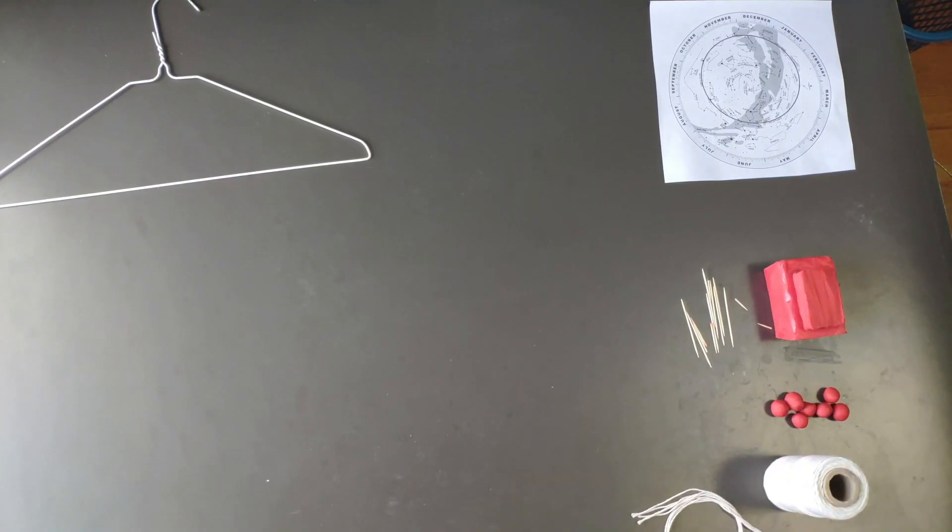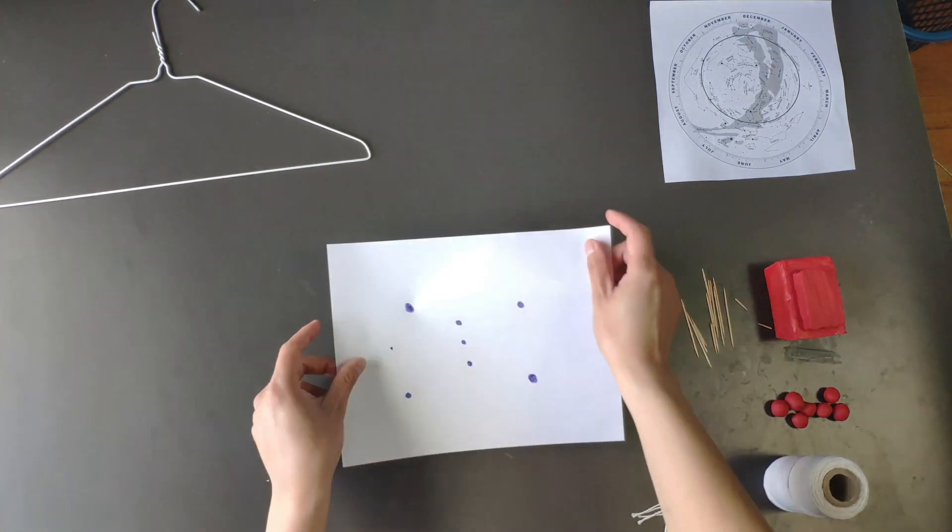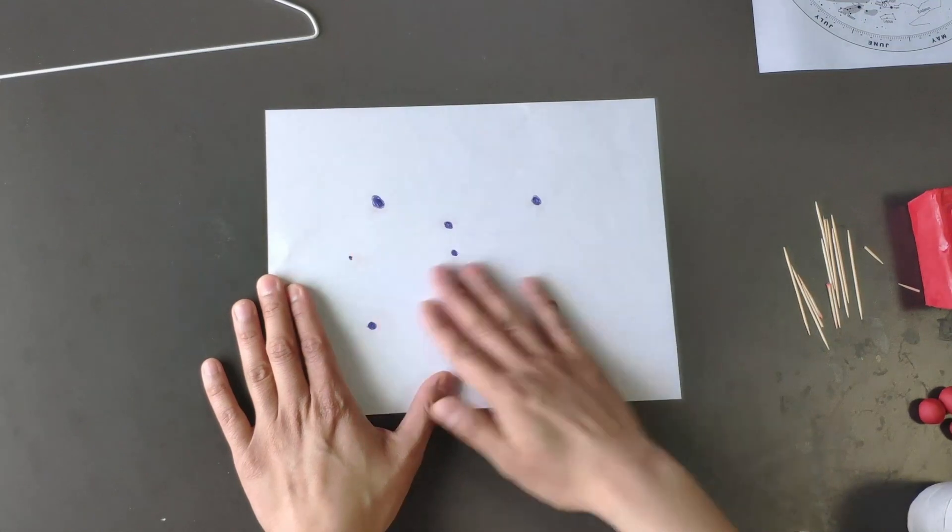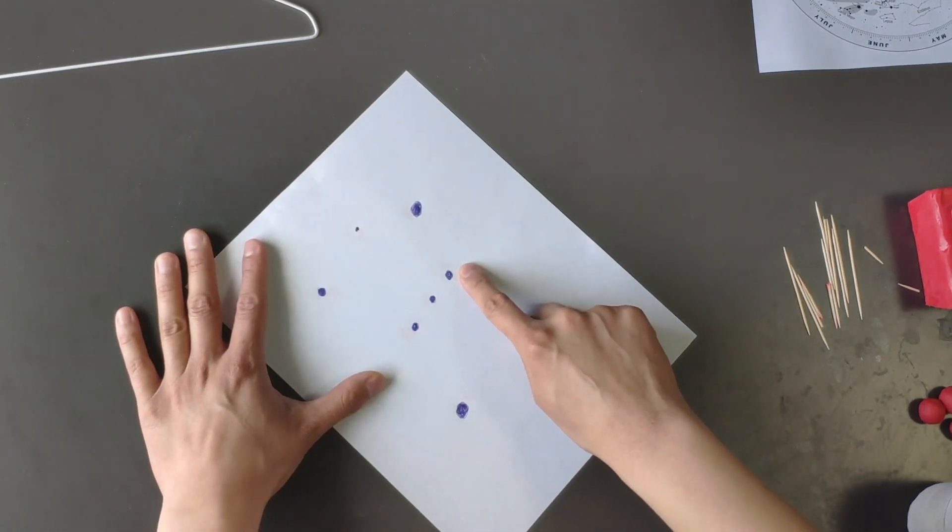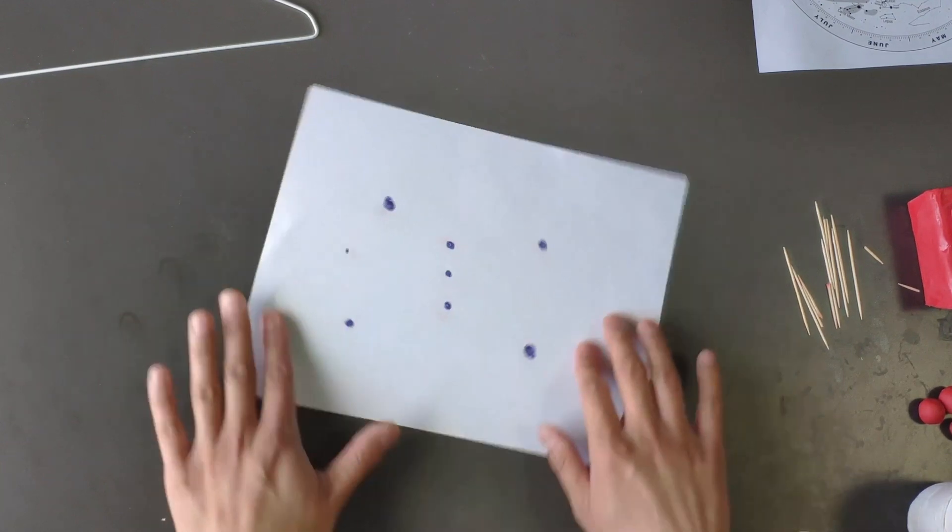So first off, what we're going to do is draw our favorite constellation onto a piece of paper. I have here my constellation of Orion. Remember the three stars in a straight line creating Orion's belt right over here.